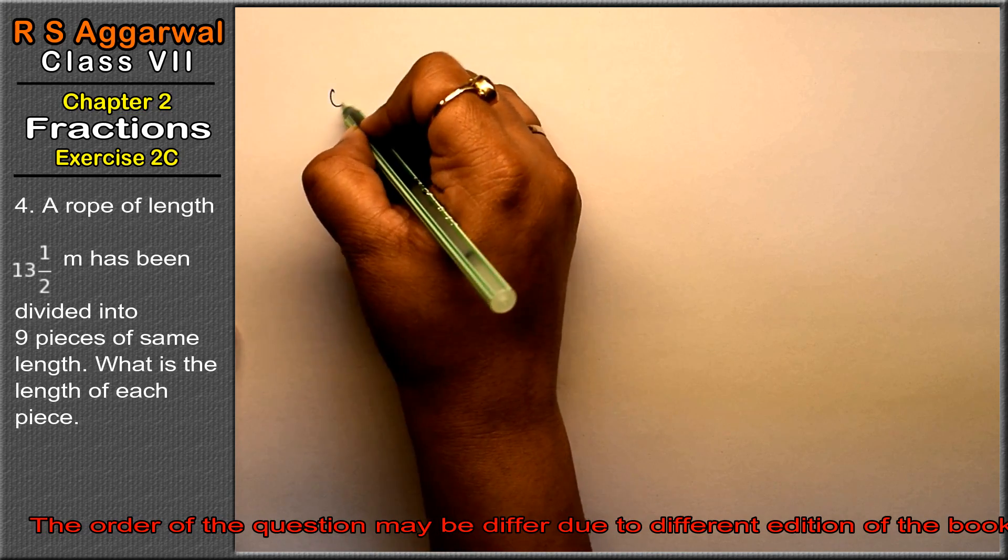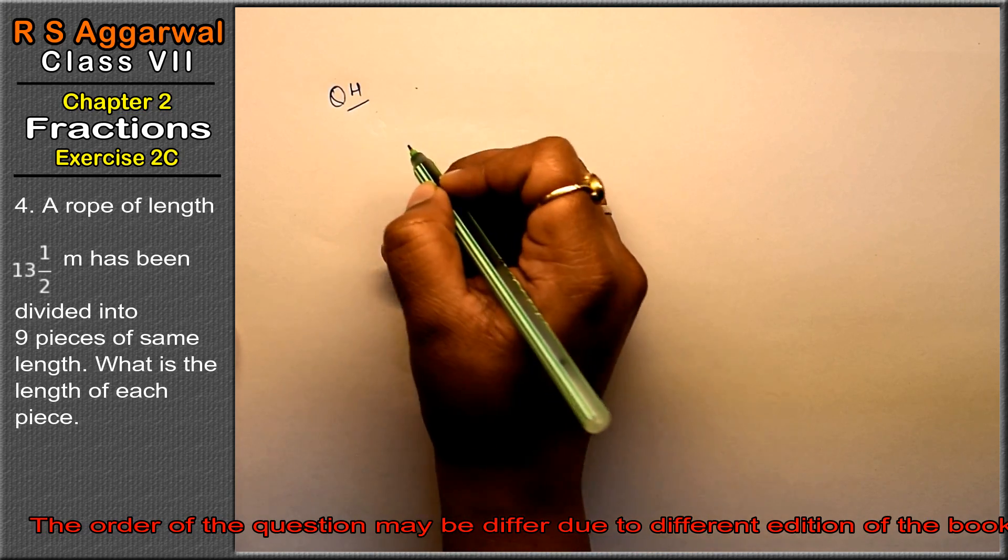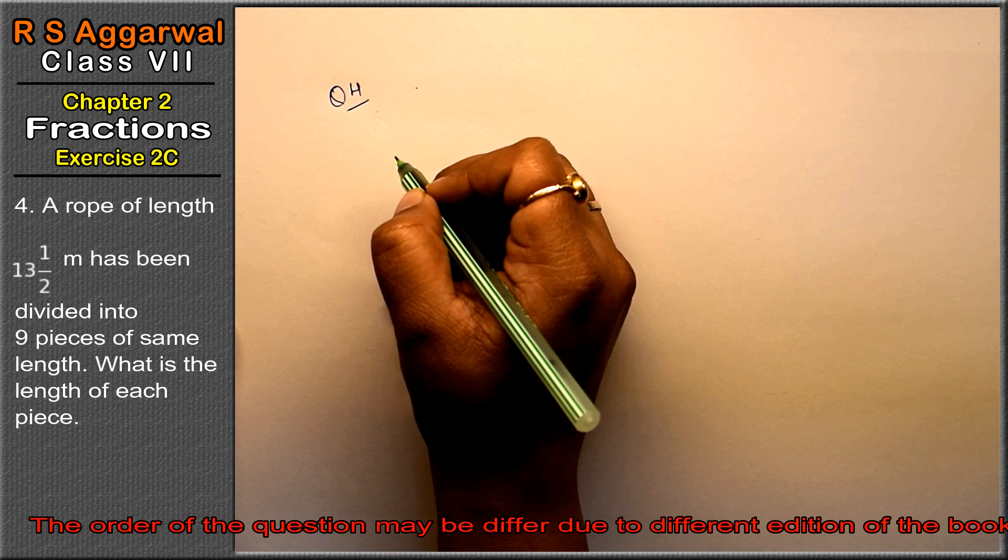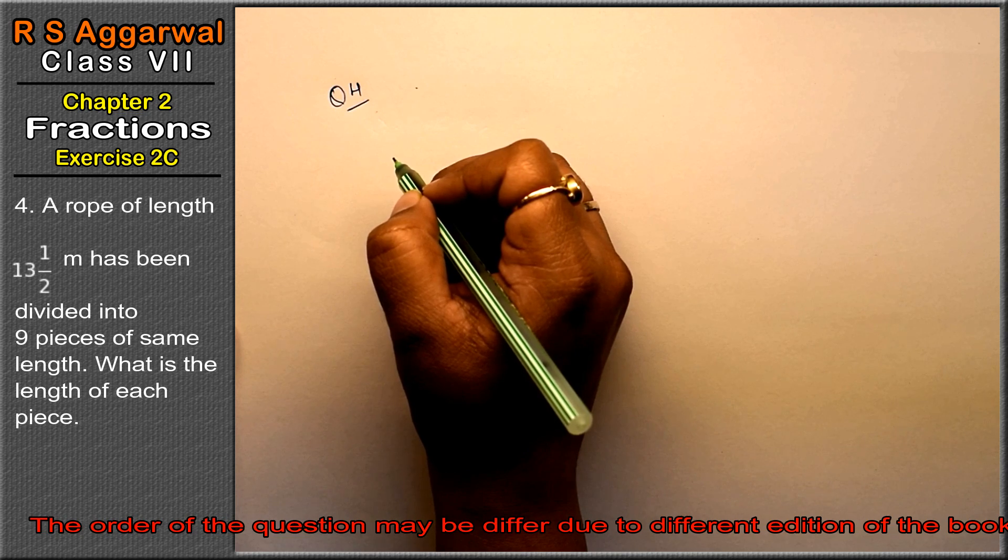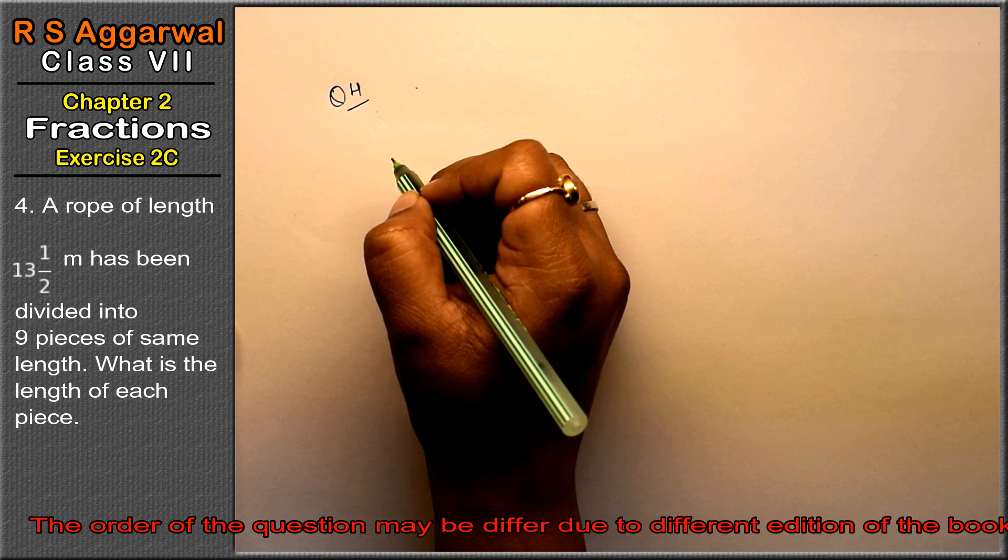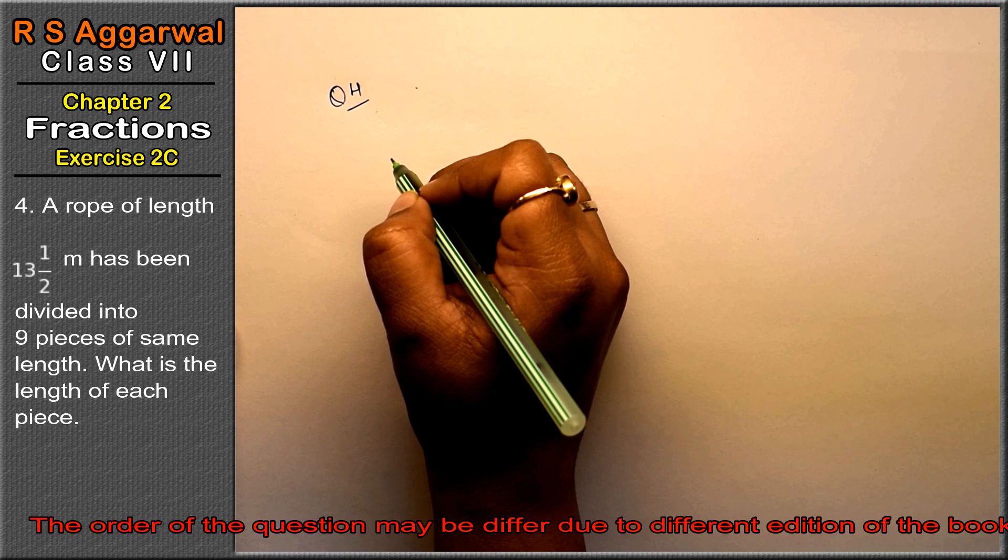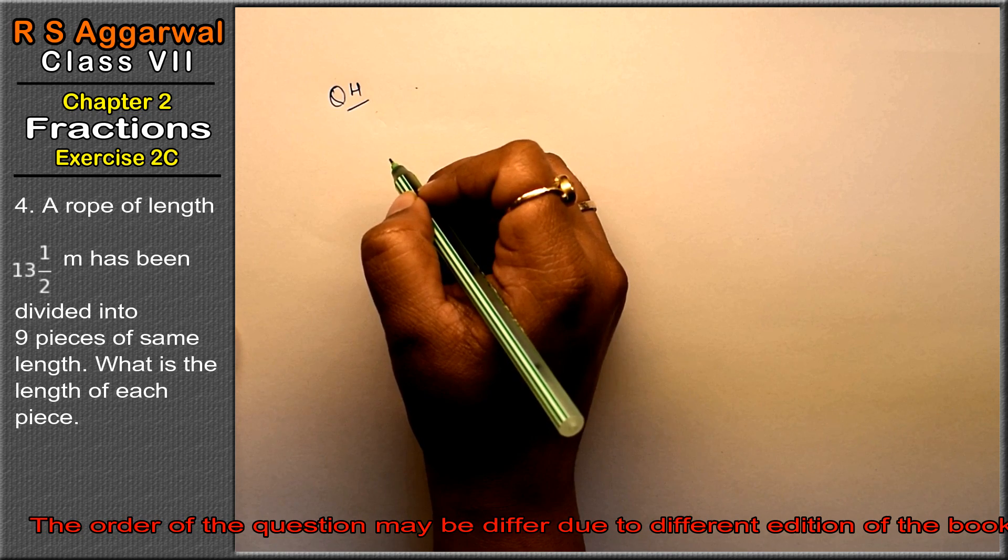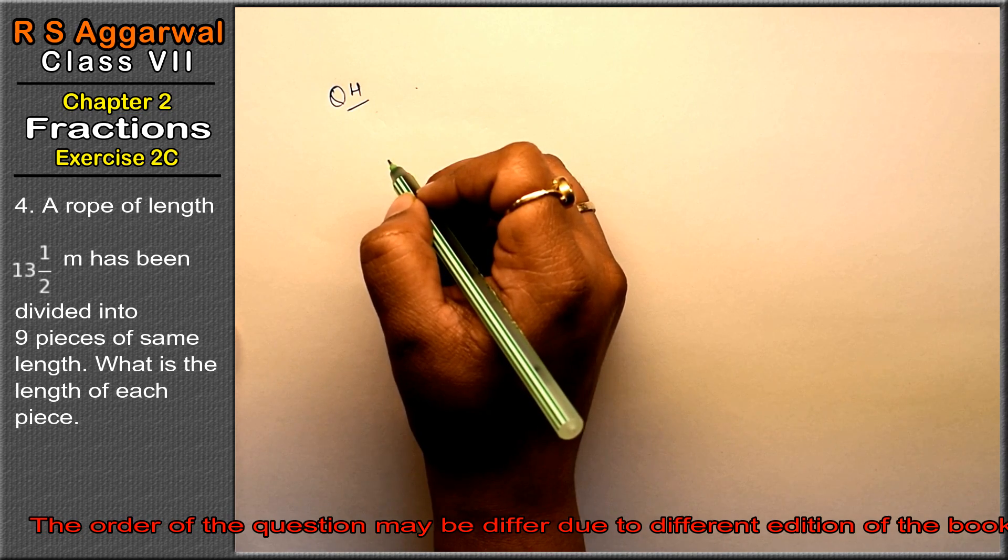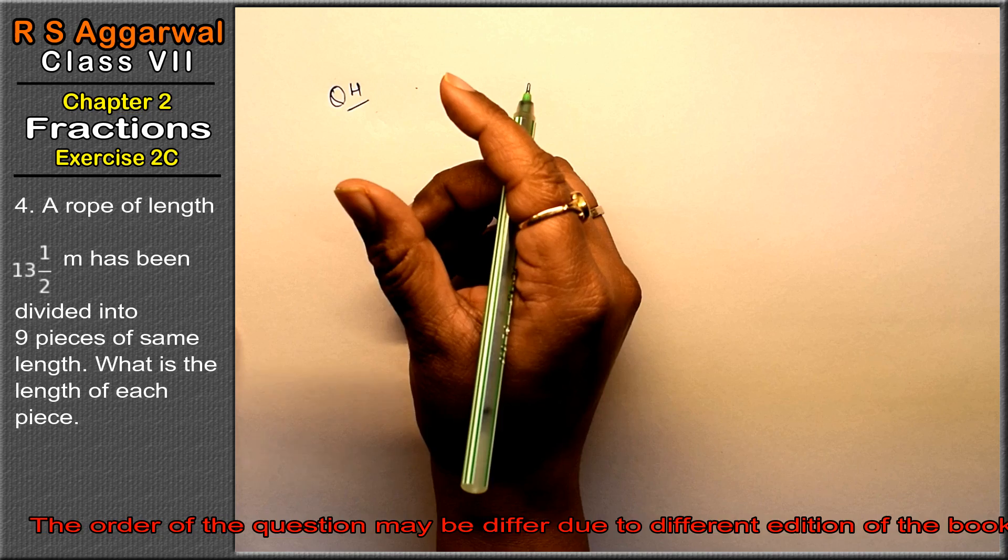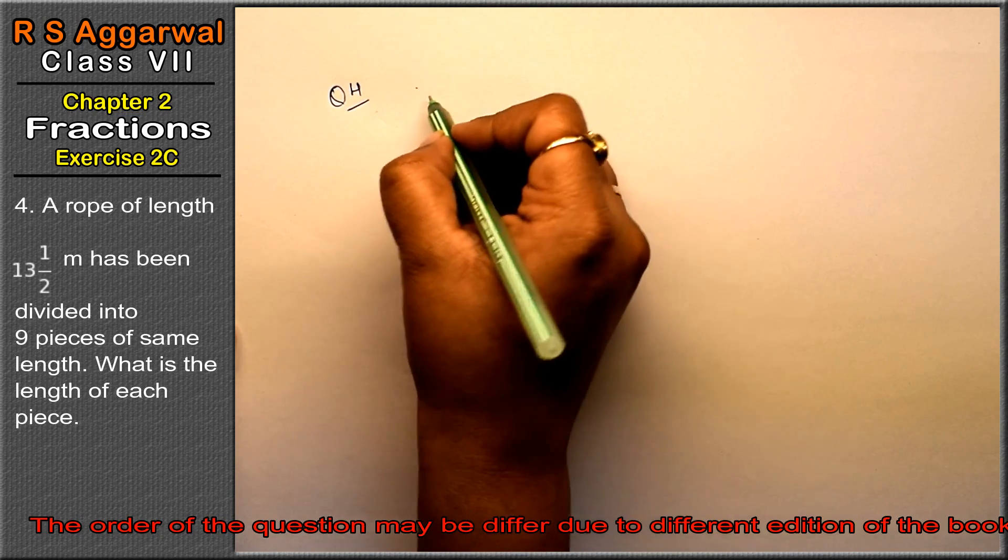Let's do question number 4 of exercise 2C, that is fractions. Question number 4 is: a rope of length 13 whole 1/2 meters has been divided into 9 pieces of same length. What is the length of each piece? Friends, we have total length of 13 whole 1/2 meters, which we have to divide into 9 pieces of equal length. So we have to find each piece's dimension.